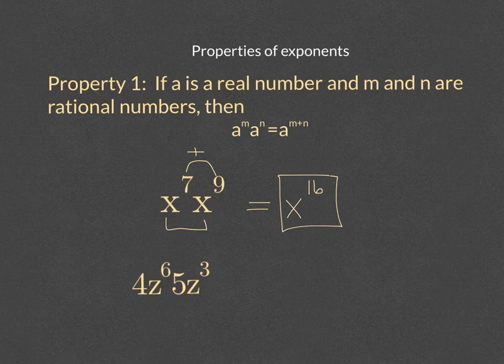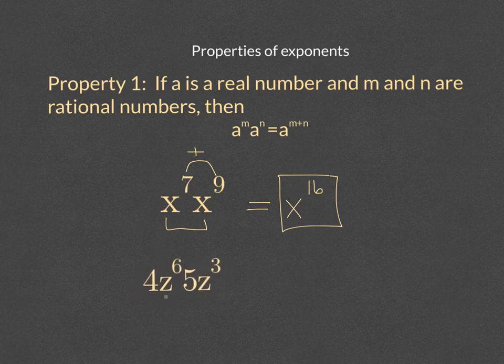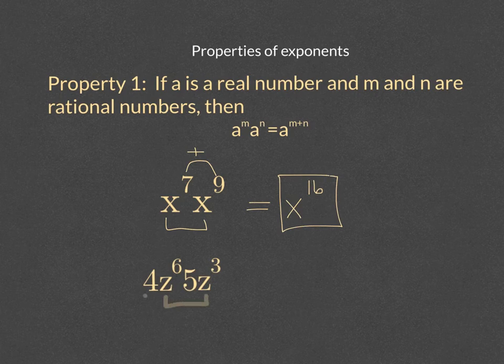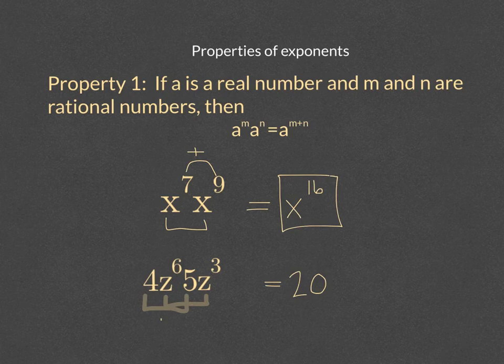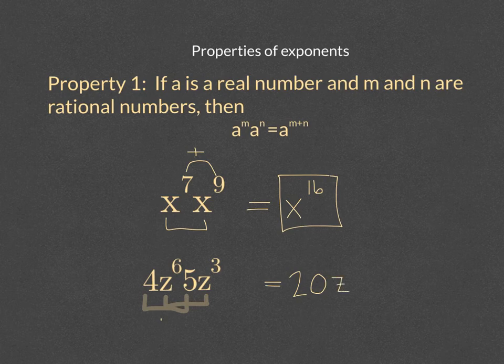So let's take a look at 4z to the sixth times 5z to the third. Now this is all one whole term because they're all combined using multiplication. So we have z. Z is our base, and the four and the five are constants. So what you can do, because the four and the five do not have a power on them, it's really like you're saying 4 times 5. So 4 times 5 would be 20. And then the second one is z to the sixth, z to the third. Now because z is the base and the power is 6 and the power is 3, we can add those powers. Our final answer will be 20z to the ninth.